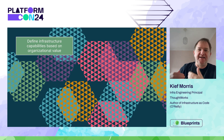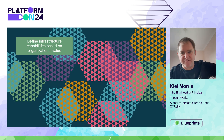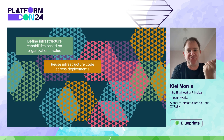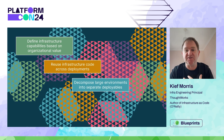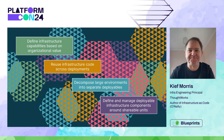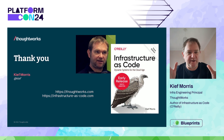To wrap up: define your infrastructure capabilities based on organizational value — start from what you're trying to achieve and what you need to deliver, and use that to drive infrastructure design. Reuse infrastructure code across deployments, decompose large environments into separately deployable infrastructure components, and define and manage those components around shareable units that can be shared across teams. Thanks a lot for joining me. I hope that was helpful. Take care.